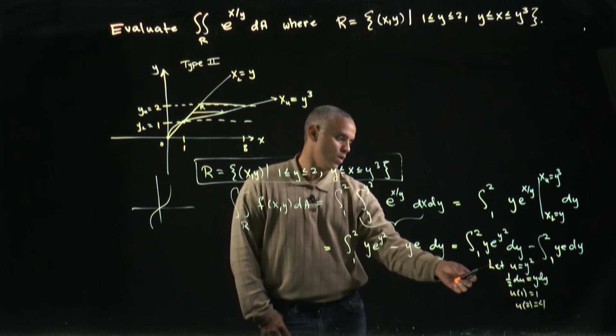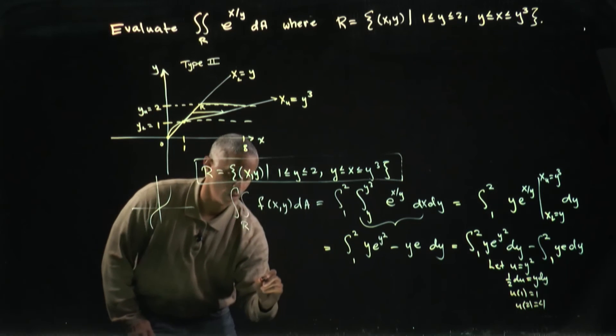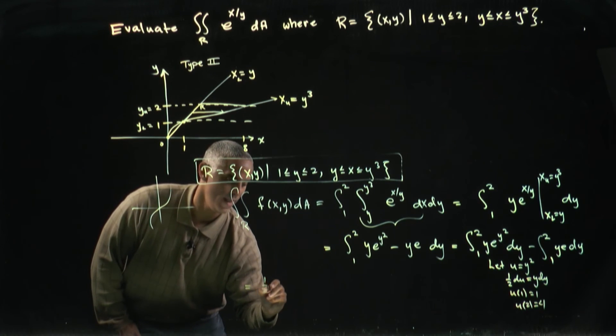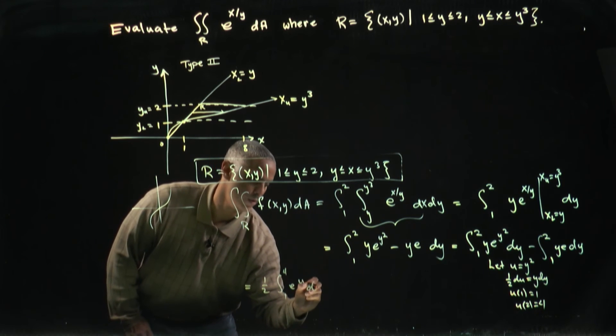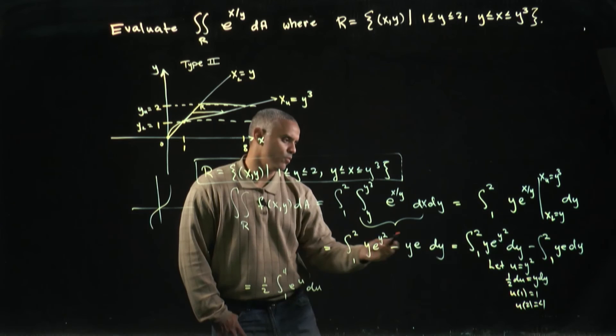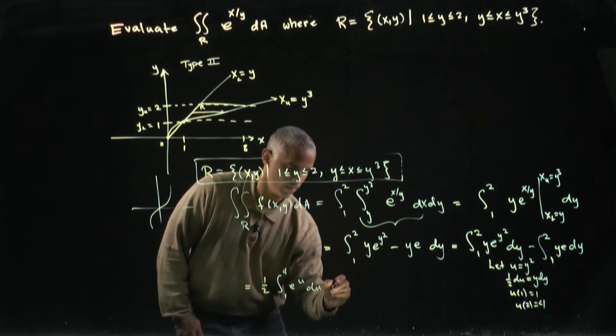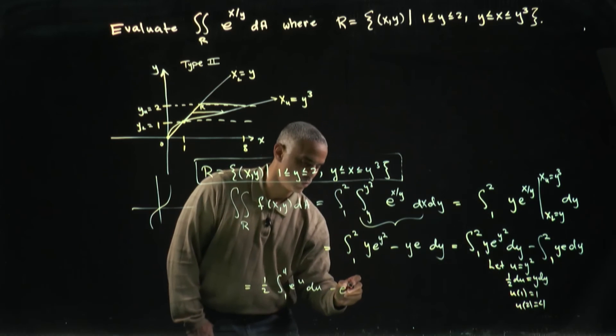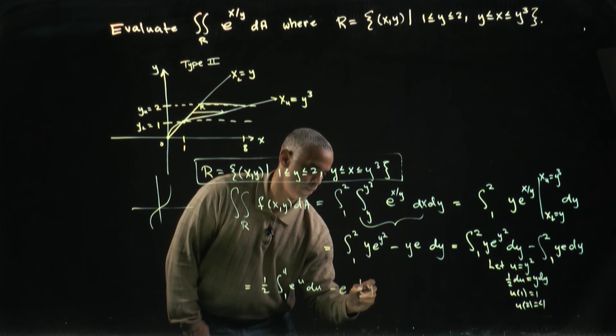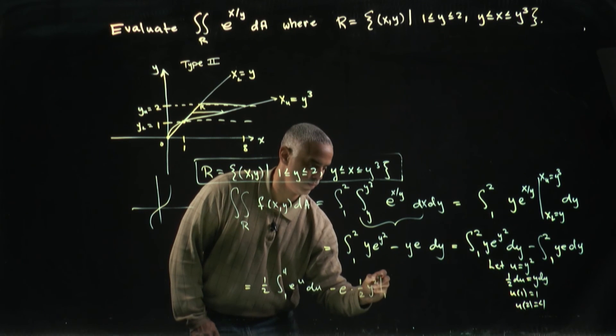So, this integral becomes one half the integral e to the u, one to four du. And this is pretty simple. Minus e, and the integral of y dy is just a half y squared, evaluated from one to two.